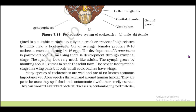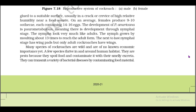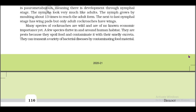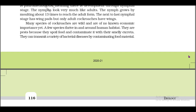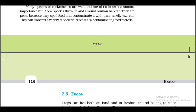The development of Periplaneta americana is paurometabolous, meaning there is development through a nymphal stage. The nymphs look very much like adults. The nymph grows by moulting about 13 times to reach adult form. The next-to-last nymphal stage has wing pads, but only adult cockroaches have wings. Many species of cockroaches are wild and of no known economic importance, yet a few species thrive in and around human habitats. They are pests because they spoil food and contaminate it with their smelly excreta. They can transmit a variety of bacterial diseases by contaminating food materials.